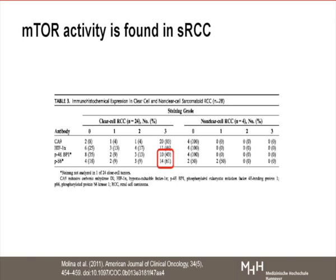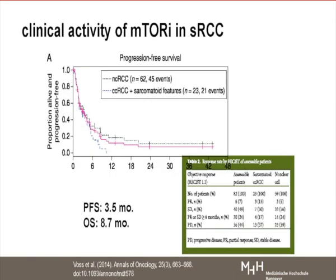Looking into tissue activity of pathways, something quite striking is that in clear-cell RCC with sarcomatoid tissue, there is an upregulation of the mTOR pathway, shown in resected tumors. In non-clear-cell RCC with sarcomatoid tissue, this was not observed — though numbers are very small. Martin Fürst then looked into mTOR activity in sarcomatoid RCC, and in only 23 patients there is some response to mTOR inhibitors, suggesting mTOR may play a role.